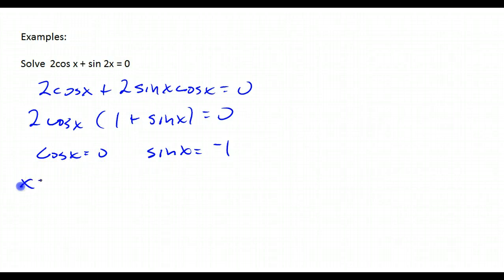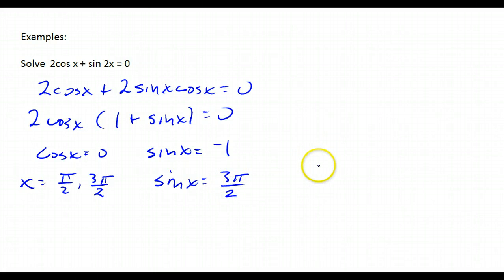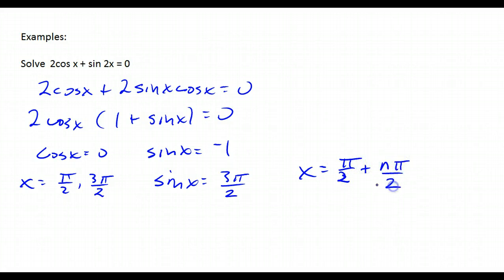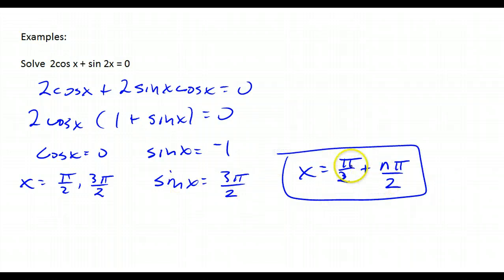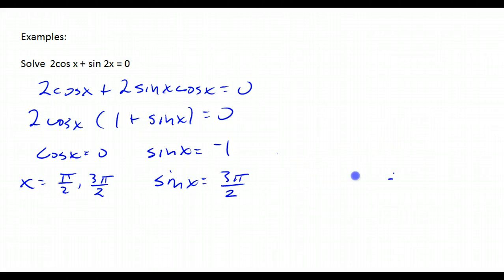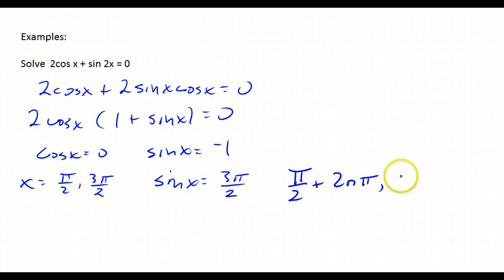Cosine x is equal to 0 at pi over 2 and 3 pi over 2, and sine x is equal to negative 1 at 3 pi over 2. We have to write two separate general forms: pi over 2 plus multiples of 2 pi, and 3 pi over 2 plus multiples of 2 pi. We can't just use multiples of pi over 2 because that would also hit 0 and pi.